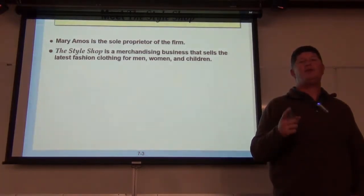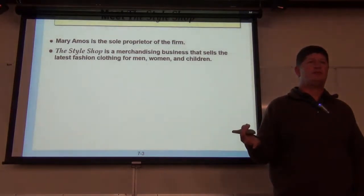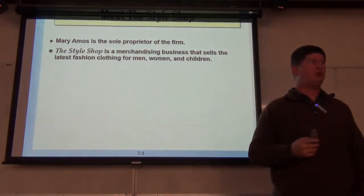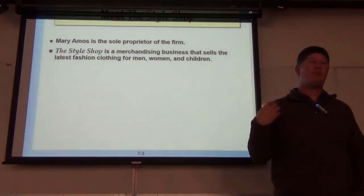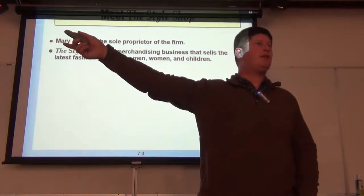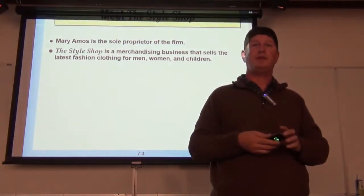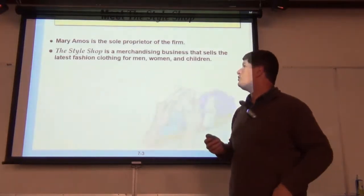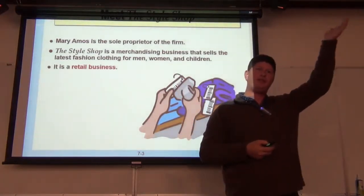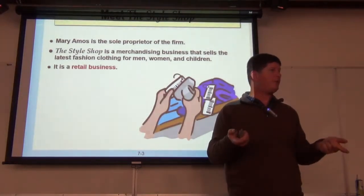So far, every company we've dealt with has been landscapers, attorneys, or accountants—they've all provided a service. Now we're going to start selling things: pens, pencils, papers, equipment, computers, books. In this example, we're going to pick a clothing store. For the clothing store to sell clothes, they buy them from somebody else, bring them in, put them on the rack, pay for them, and wait for you to buy them and pay. That's called a retail business. The bookstore down here is my favorite example—they buy books, put them on the shelf, and wait for you to come in and pay for them.